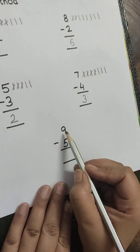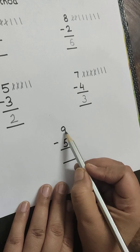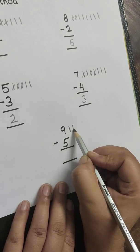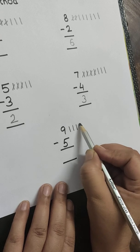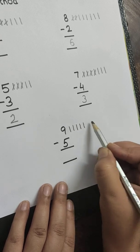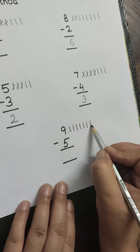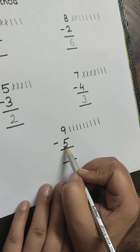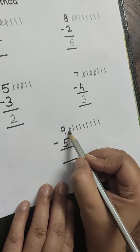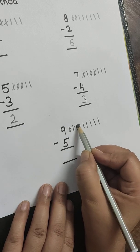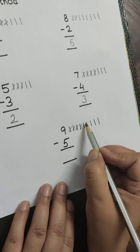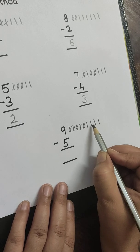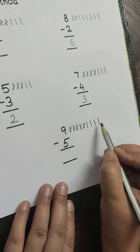Next is 9 minus 5. How many lines we have to draw? 9: 1, 2, 3, 4, 5, 6, 7, 8, 9. Minus 5: 1, 2, 3, 4, 5. How many left? 1, 2, 3, 4.